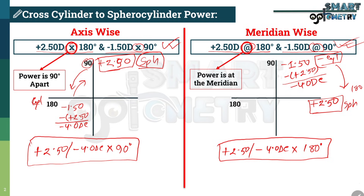Notice the difference: for axis-wise power, minus 4 was at 90 degree axis, but for meridian-wise power, minus 4 is at 180 degree axis — totally opposite. This was for understanding how power is distributed in axis-wise vs meridian-wise notation. In an exam you won't have time to draw the optical cross each time, so in the next slide we will see three steps to directly identify the sphero-cylindrical format from axis-wise or meridian-wise power.